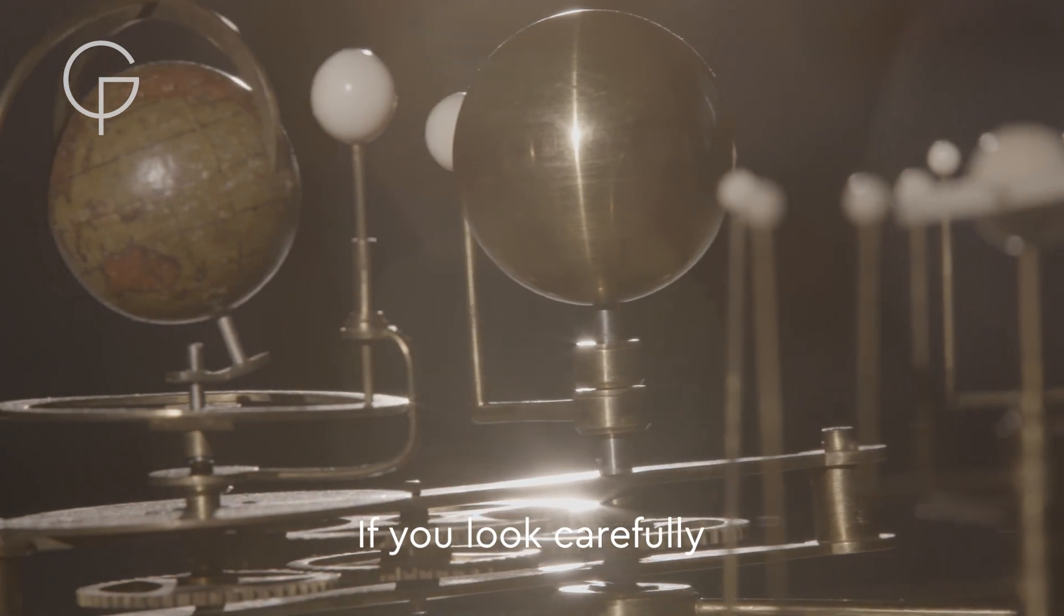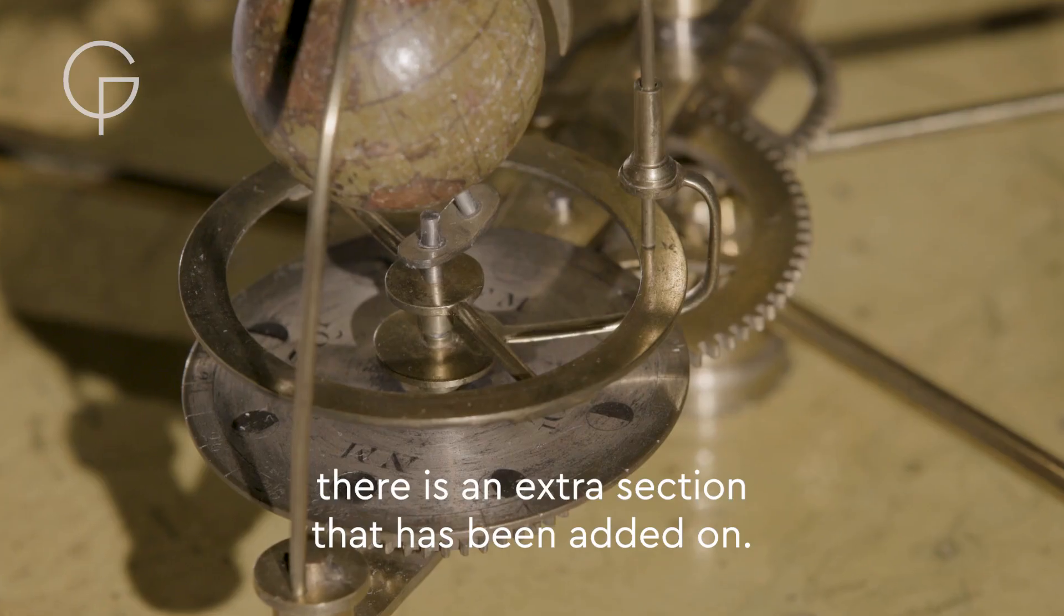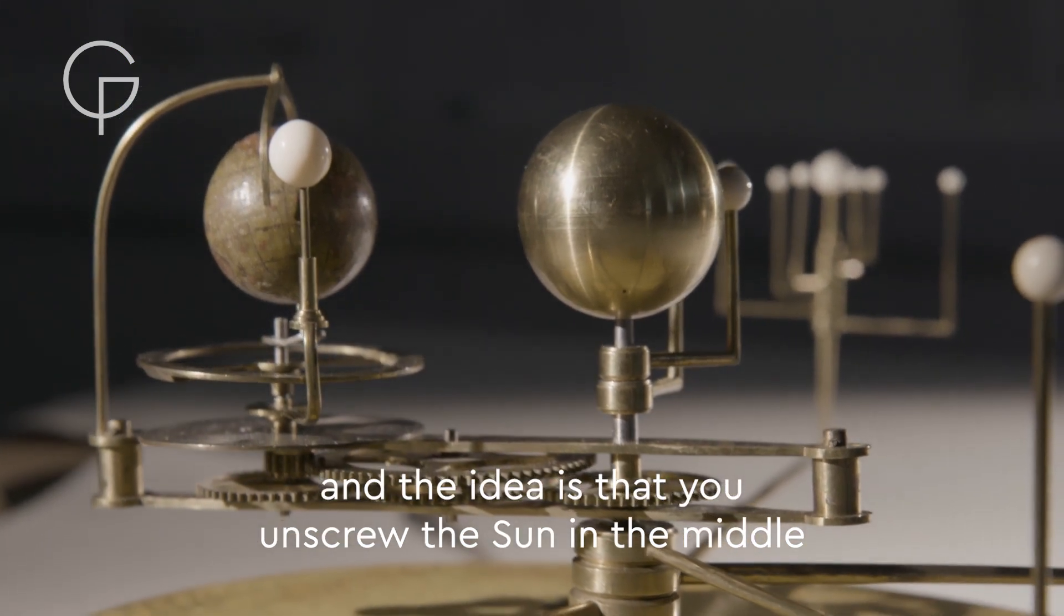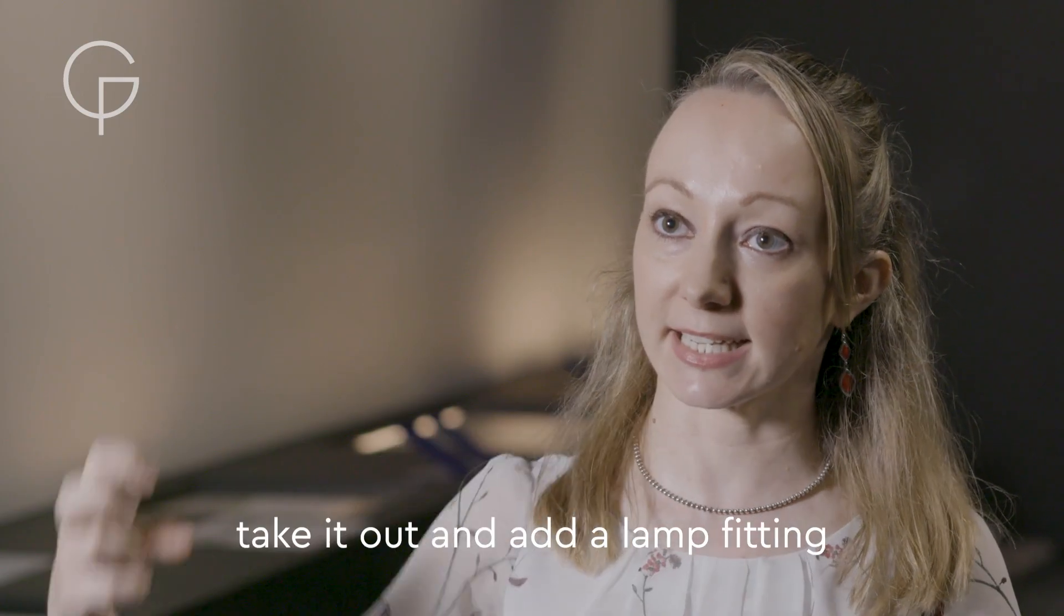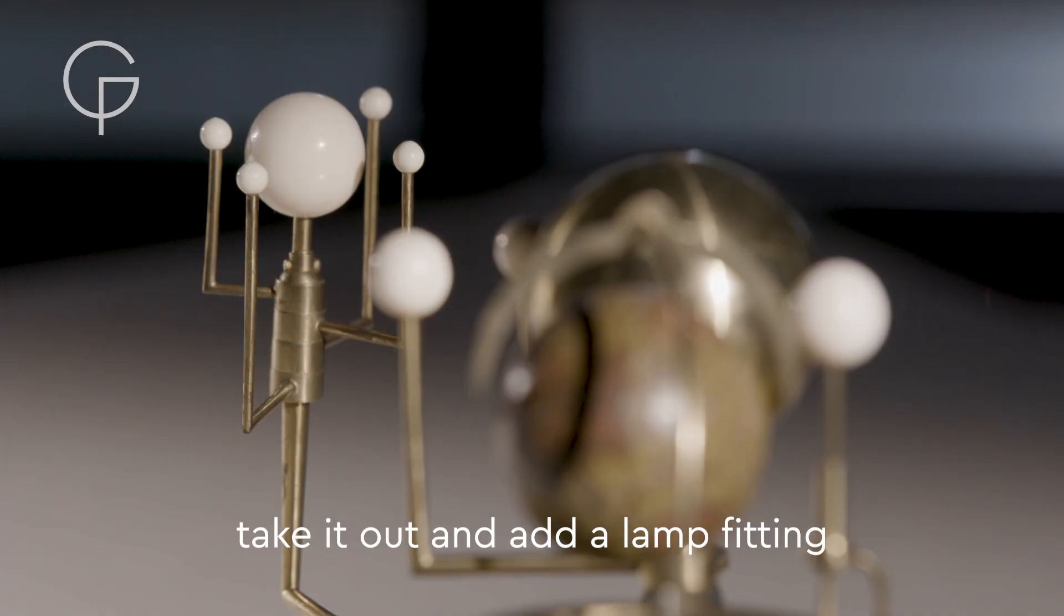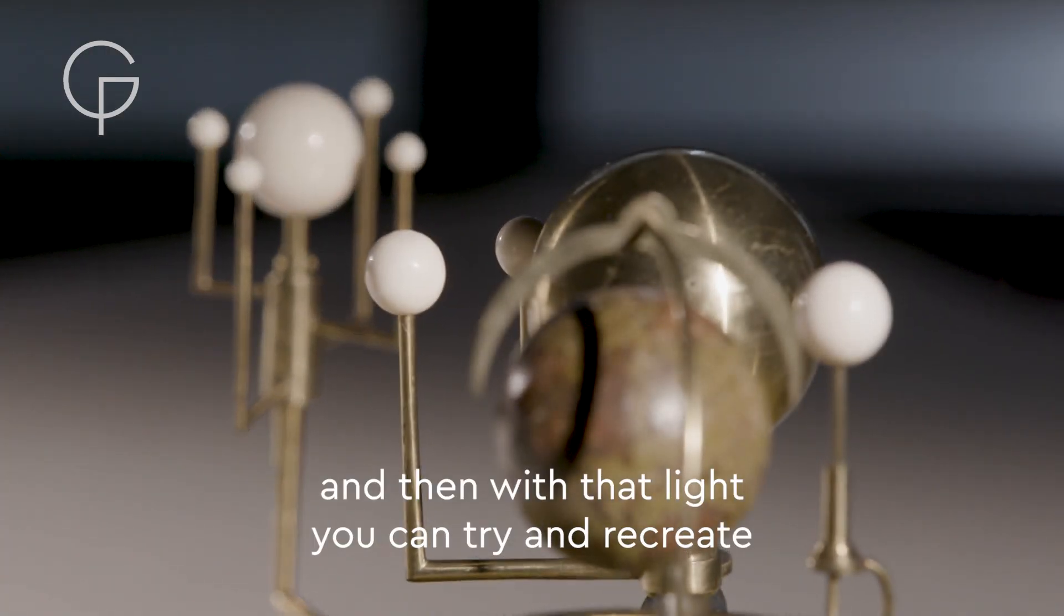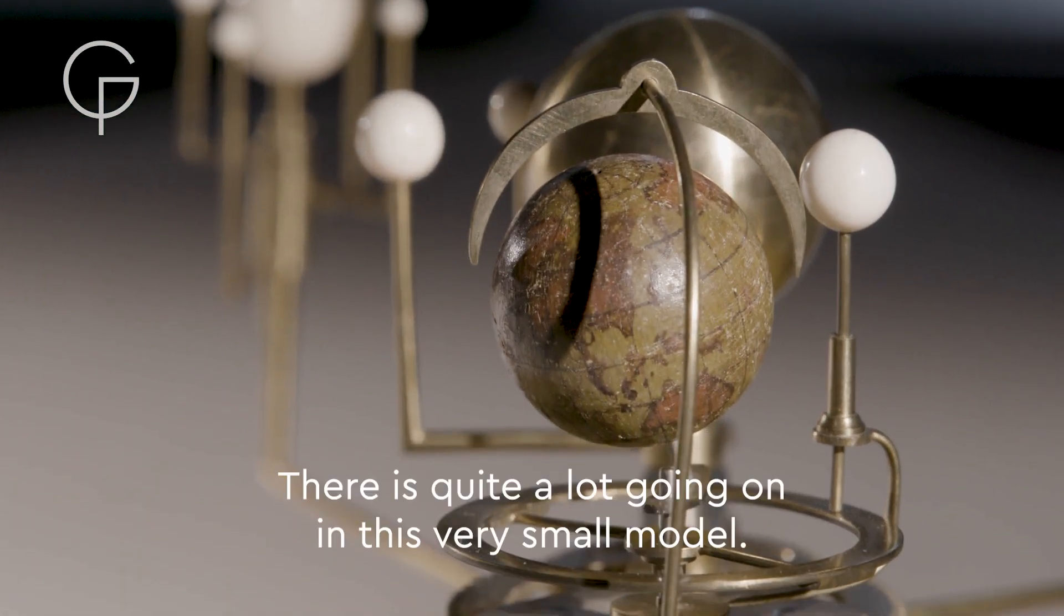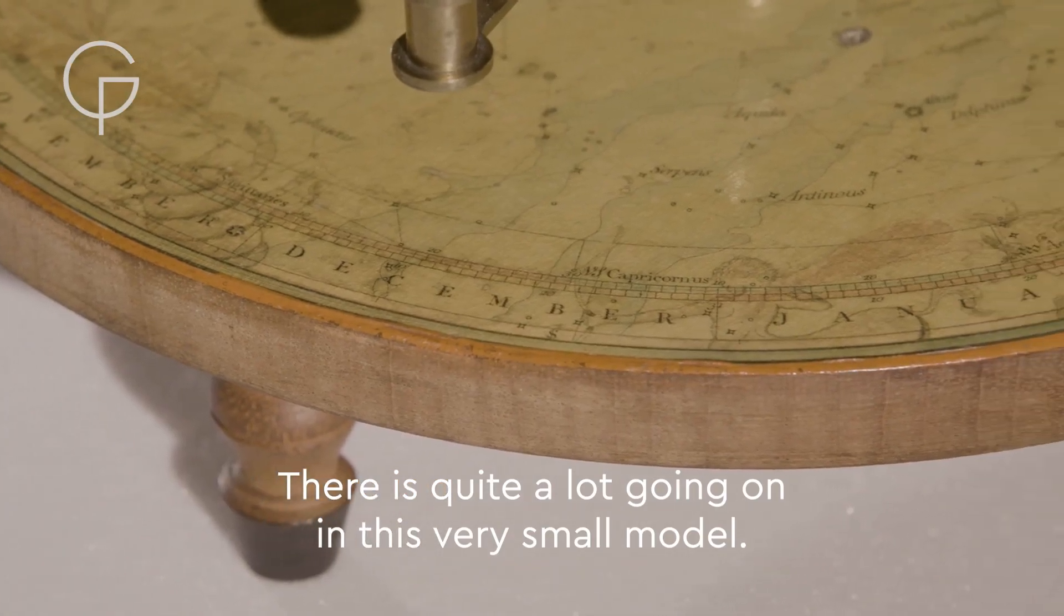If you look carefully, there's an extra section that's been added on. It's got gears underneath and it shows the earth and the moon. The idea is that you unscrew the sun in the middle, take it out and add a lamp fitting. And then with that light, you can try and recreate the phases of the moon as it goes around the earth. There's quite a lot going on in this very small model.